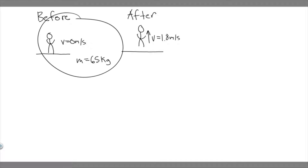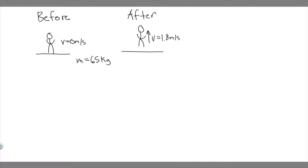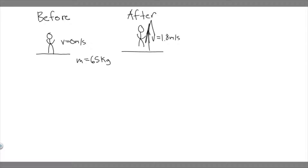So this is just an image of what's going on. We have this basketball player, and so in the beginning they're going to be traveling 0 meters per second because they're just standing still. And then after, they're going to jump and they're going to be traveling 1.8 meters per second in the upward direction. Knowing that, let's go ahead and start with A.